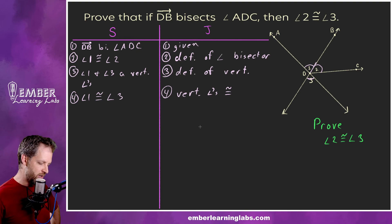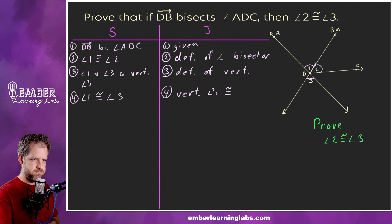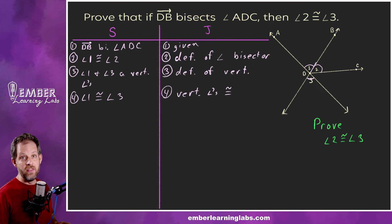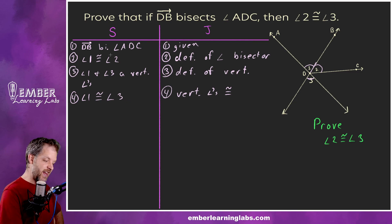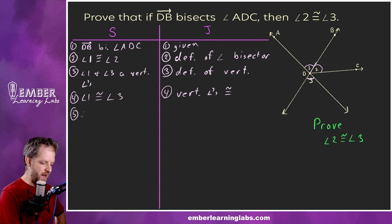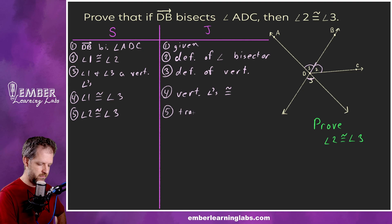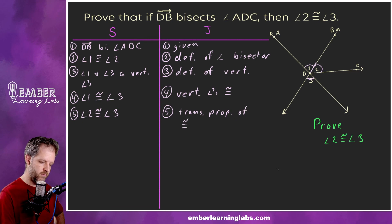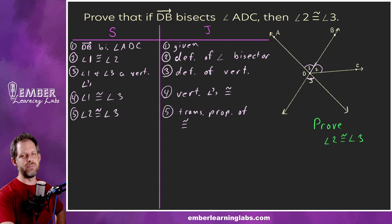Now we use a property we just learned: if angle one is congruent to angle two and angle one is congruent to angle three, then we can say angle two is congruent to angle three. Step 5: Angle two is congruent to angle three — by the transitive property of congruence. QED — and thus it is proved! See you in the next one — don't forget to like, comment, subscribe. Adios!